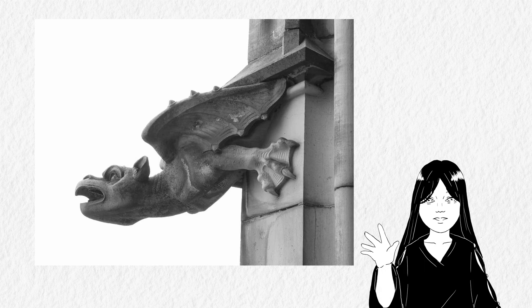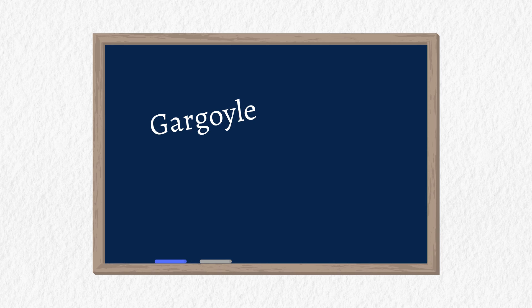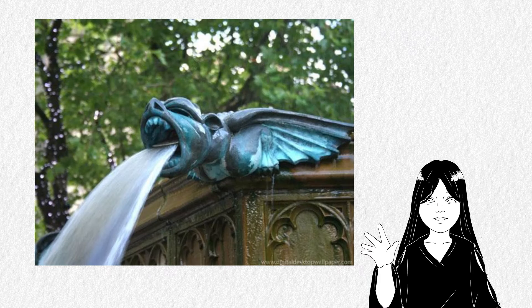From the etymology side, the word gargoyle derives from the French word for throat, gorge. It makes sense, because gargoyles are not only decorators but also sculptures with hollow necks directing rainwater away from the building through their mouth. By keeping water away from the wall, gargoyles help prevent the construction from erosion and other water damage.